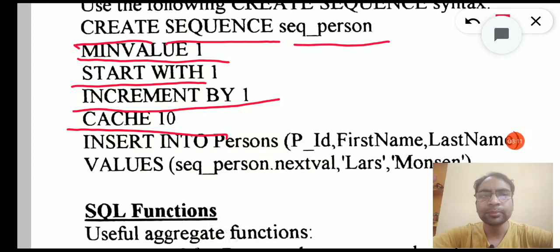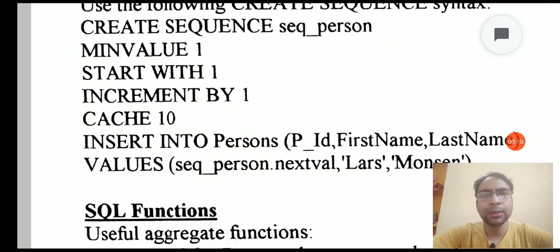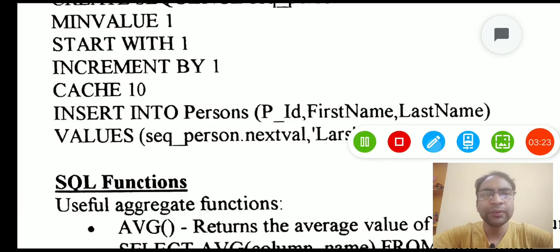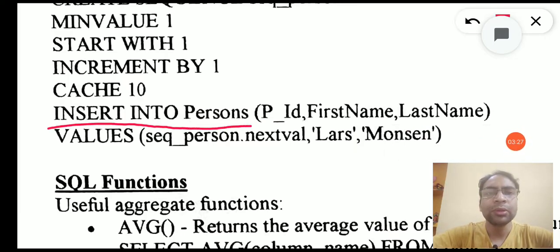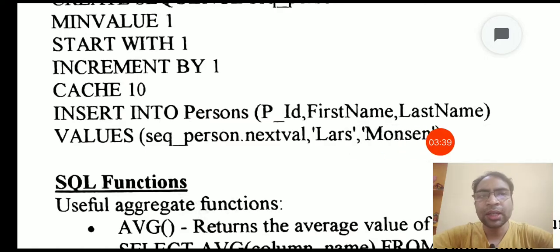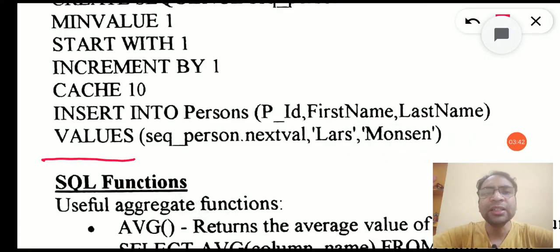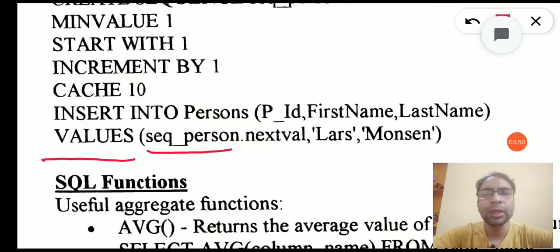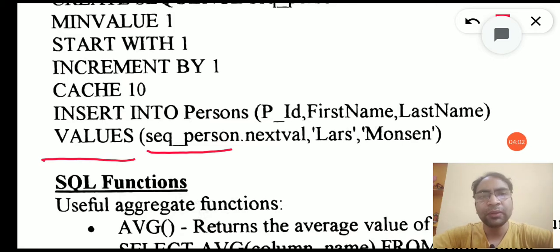Once this sequence is created, we need to use it to insert the auto incremented value. We use the INSERT INTO clause to insert the record. Whenever we insert a new record, we type INSERT INTO, then the table name, then the columns we would like to insert — for example, the field P_ID. For the values, we supply the name of the sequence we just created, which is SEQ_PERSON. This SEQ_PERSON will take care of the auto increment value, incrementing the previous value by 1 and inserting it into the table.